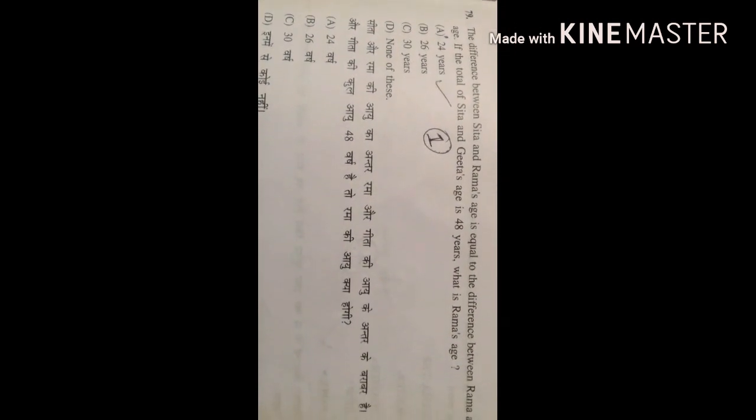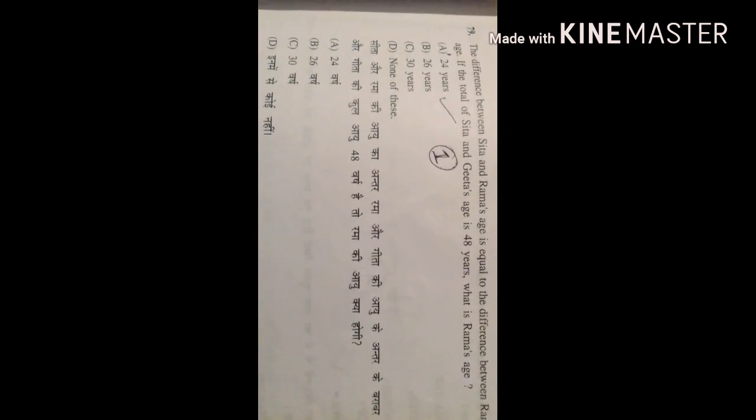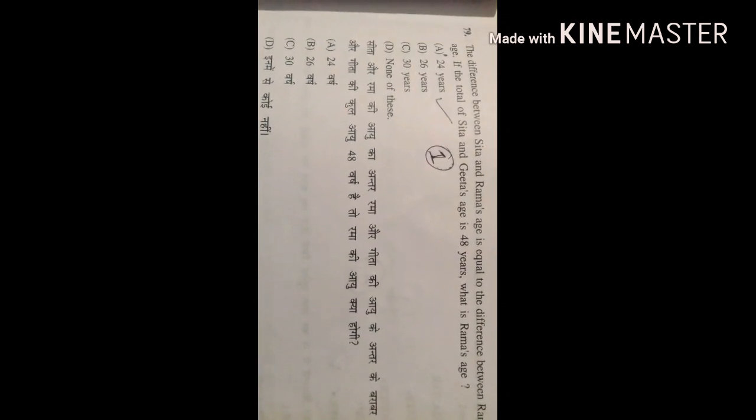And in 79th question, the difference between Sita and Rama's age is equal to the difference between Rama's and Gita's age. If the total of Sita and Gita's age is 48 years, what is Rama's age? So the correct answer is A, 24 years.